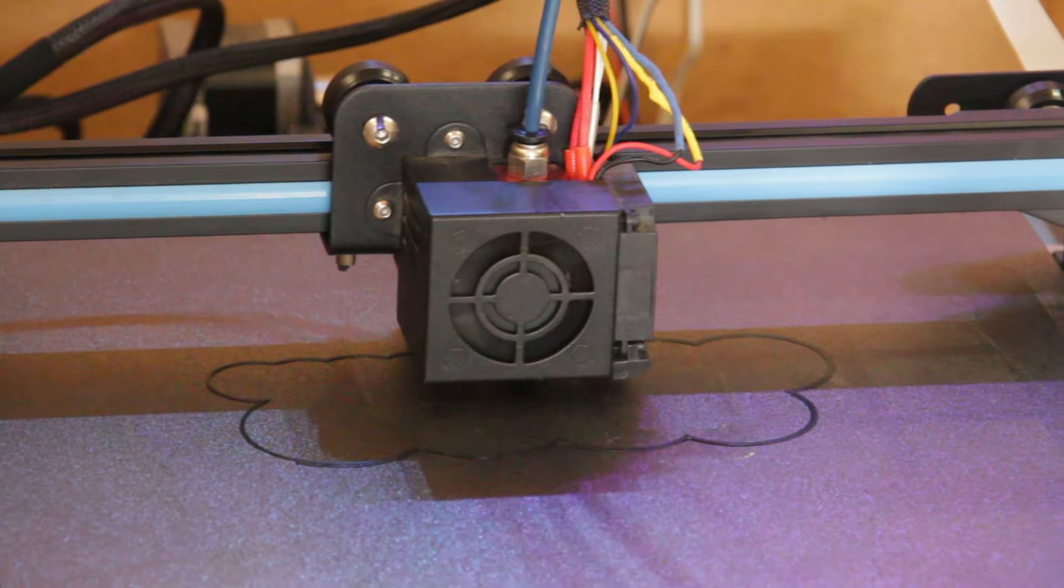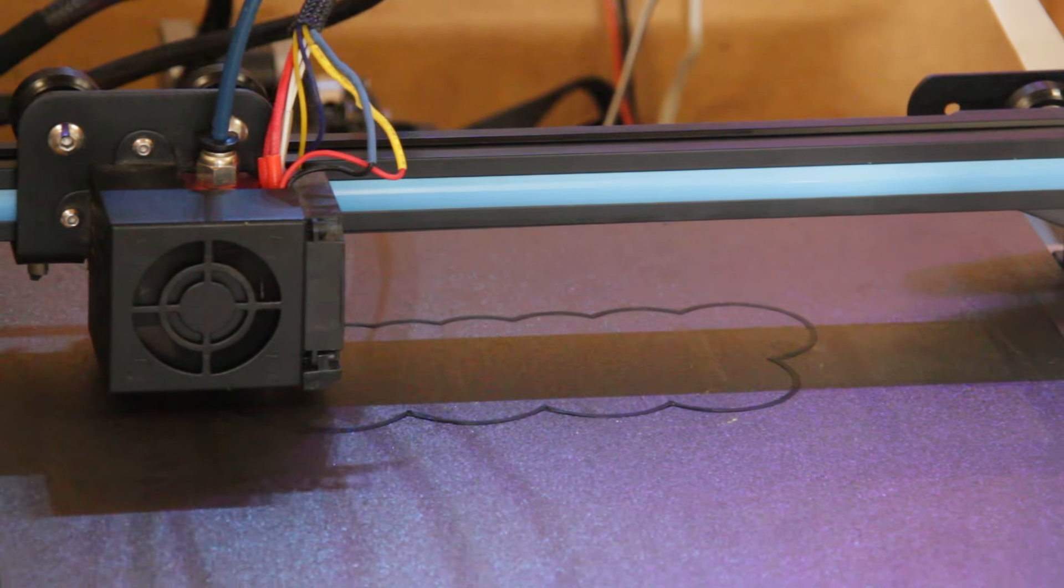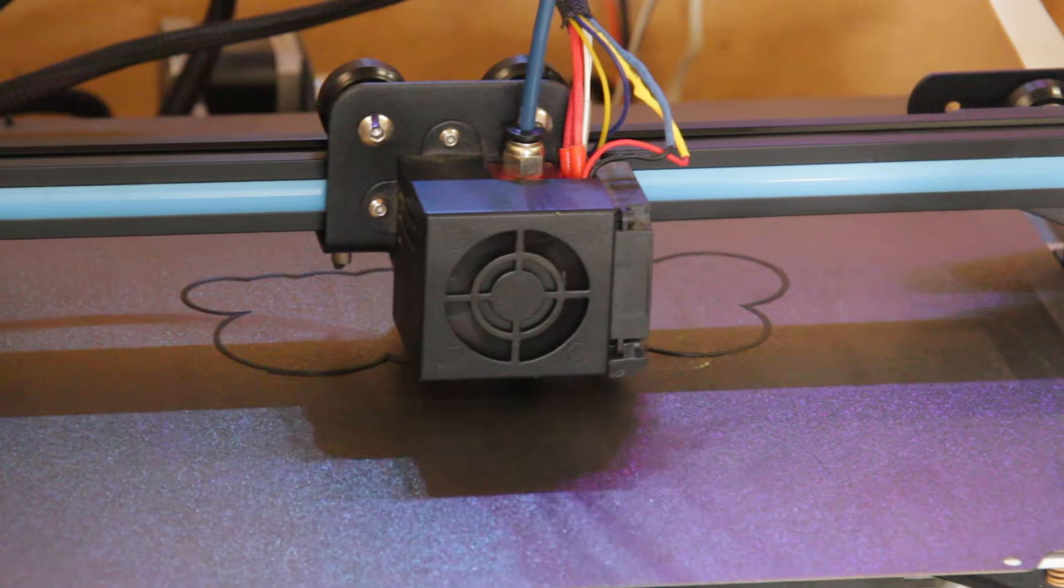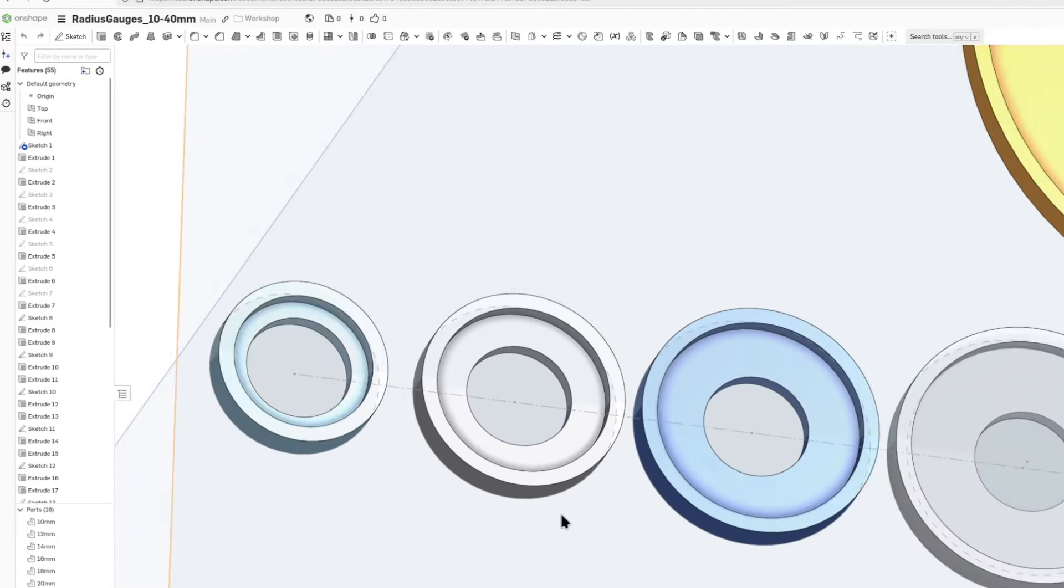But I thought I'd 3D print some radius gauges instead. These last longer than paper, so I'll be able to reuse them. These won't take that long to print. I've designed them so they can stack on top of each other.